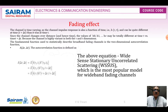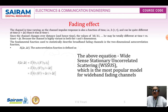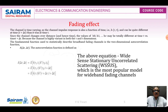The time delay of the waveform delivered to the receiver changes since the channel changes over distance and hence time. The values of h(τ,t) may be totally different at different times. The fundamental function used to statistically describe broadband fading channels is the two-dimensional autocorrelation function. The WSSUS — Wide Sense Stationary Uncorrelated Scattering — model is the most popular model for broadband fading channels, and there are many other statistical models to discuss later.